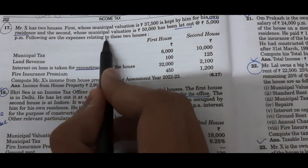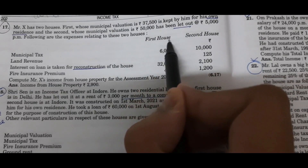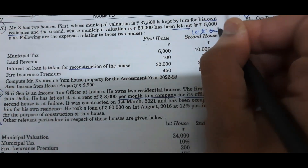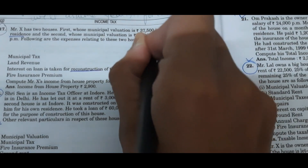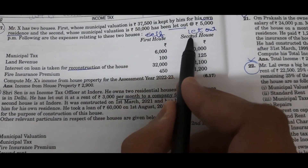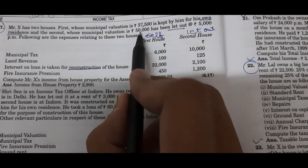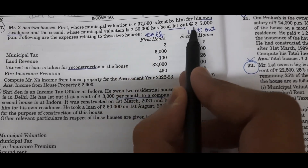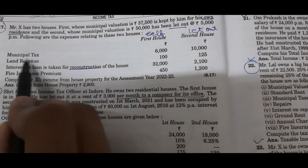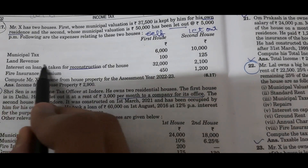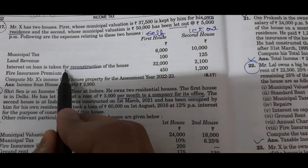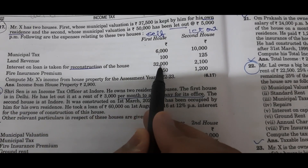The following are the expenses relating to these two houses. The first house is self-occupied and the second house is let out at Rs. 5,000 per month. For the first house: municipal tax is Rs. 6,000, land revenue is Rs. 100, and interest on loan taken for reconstruction of the house is Rs. 32,000.